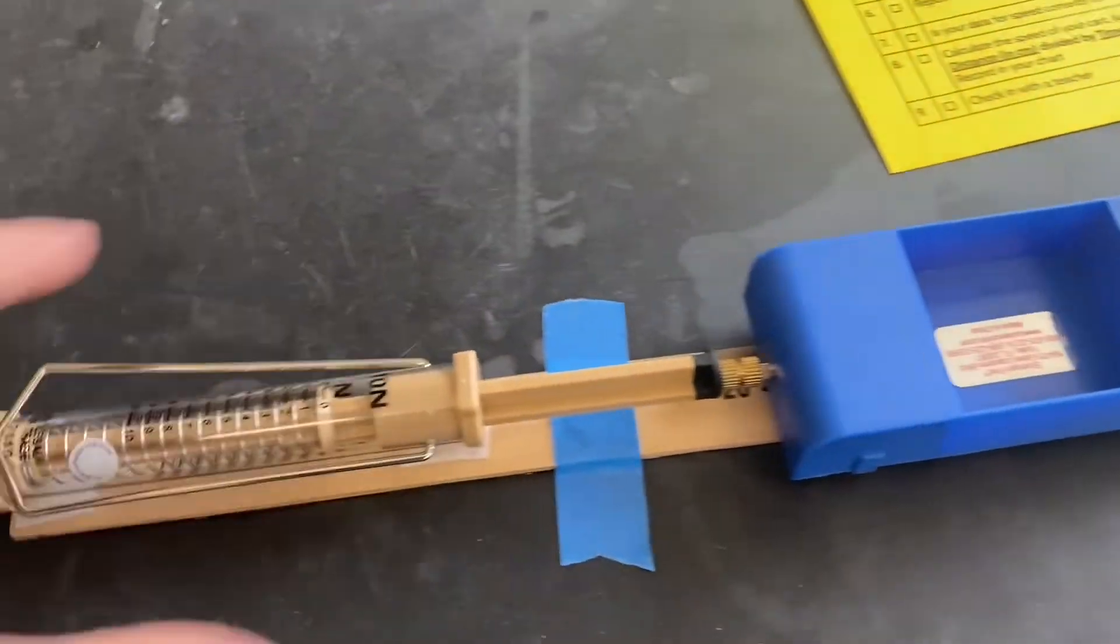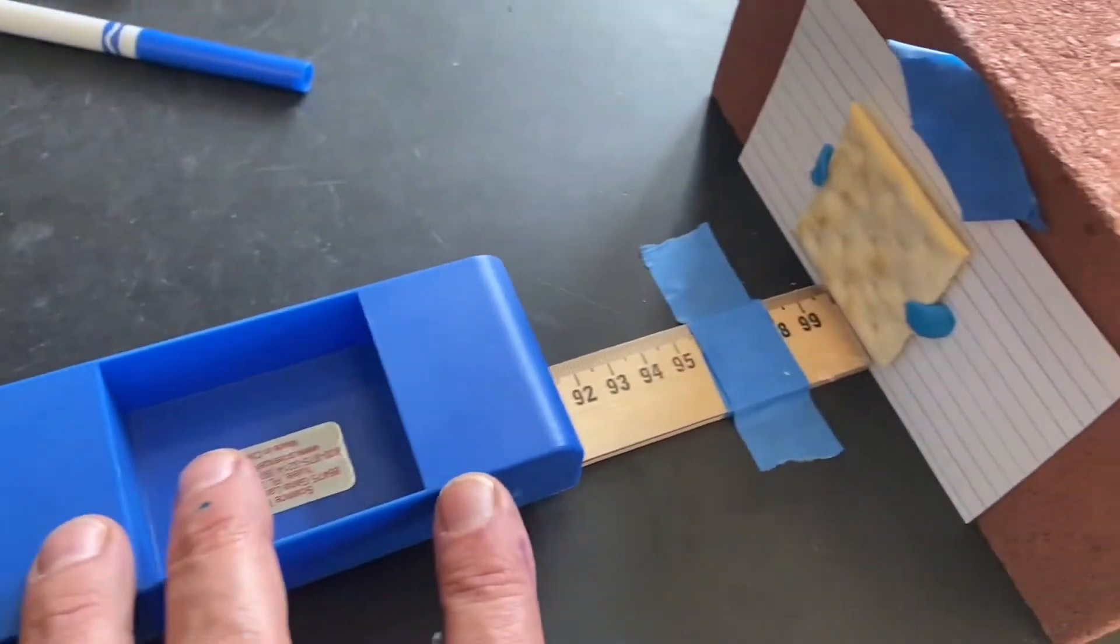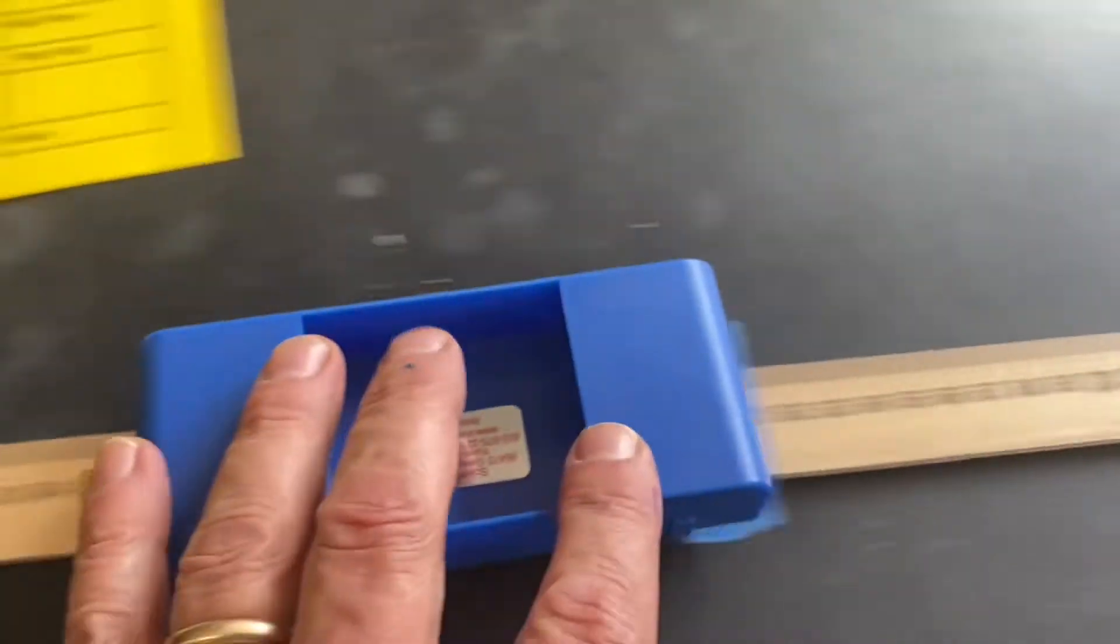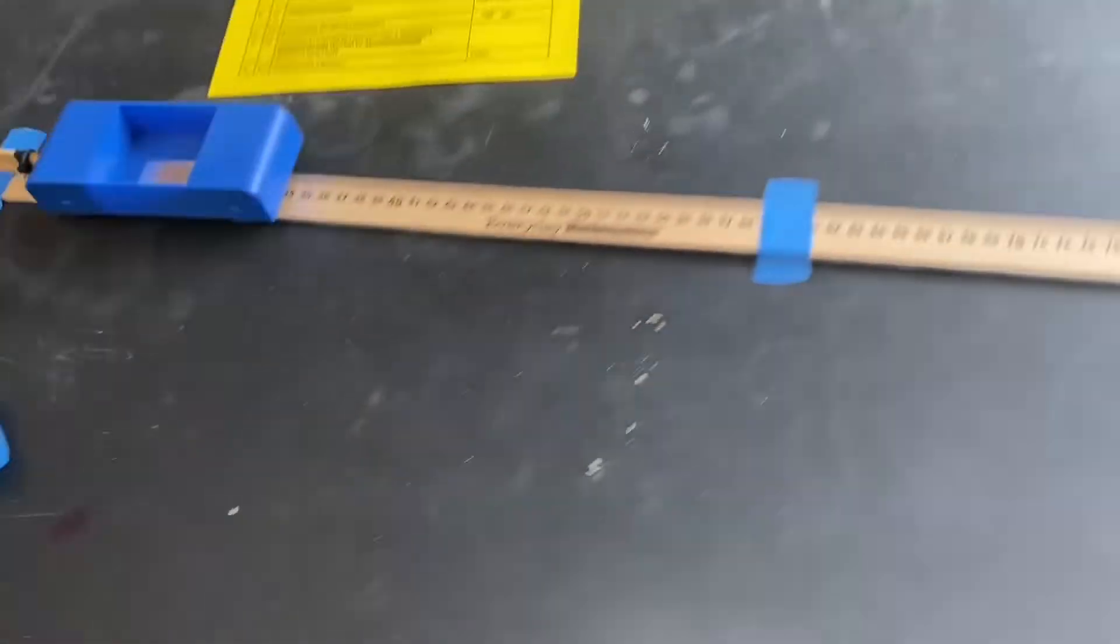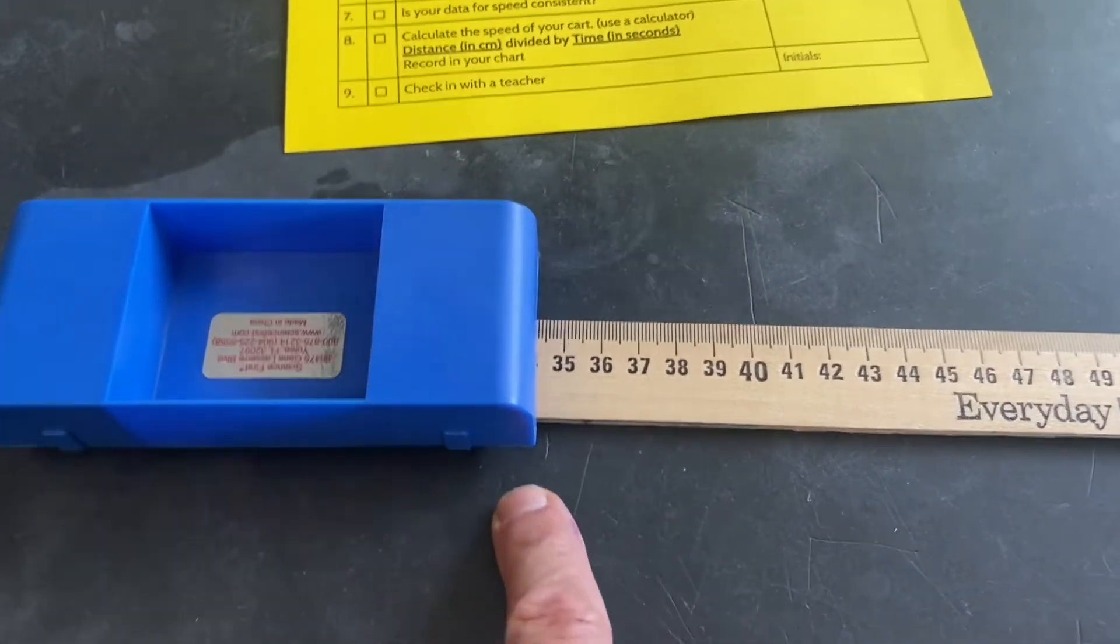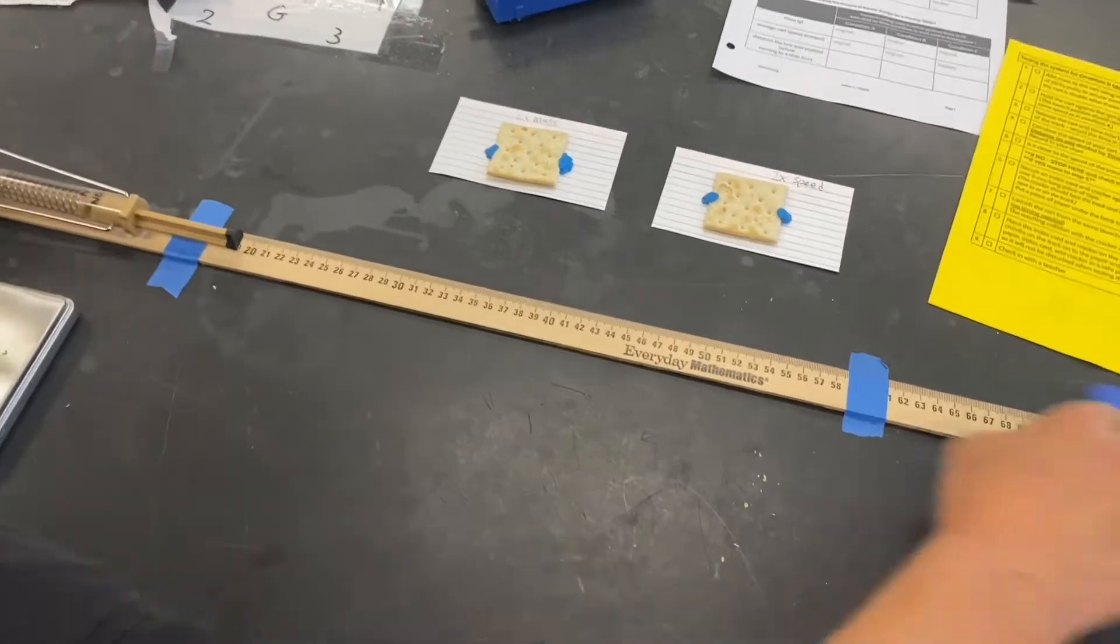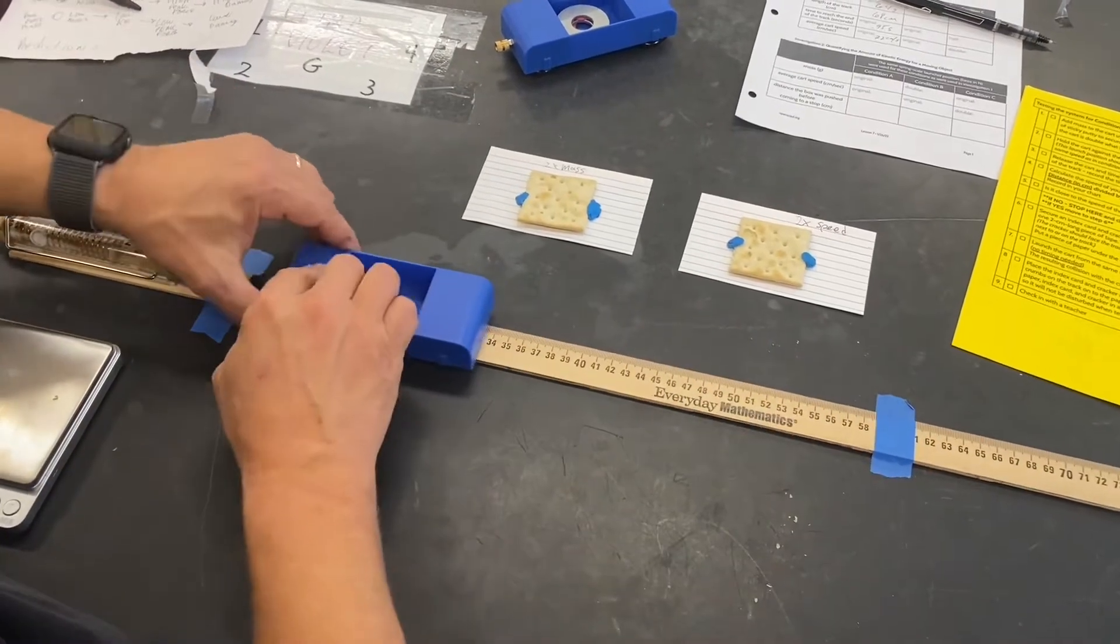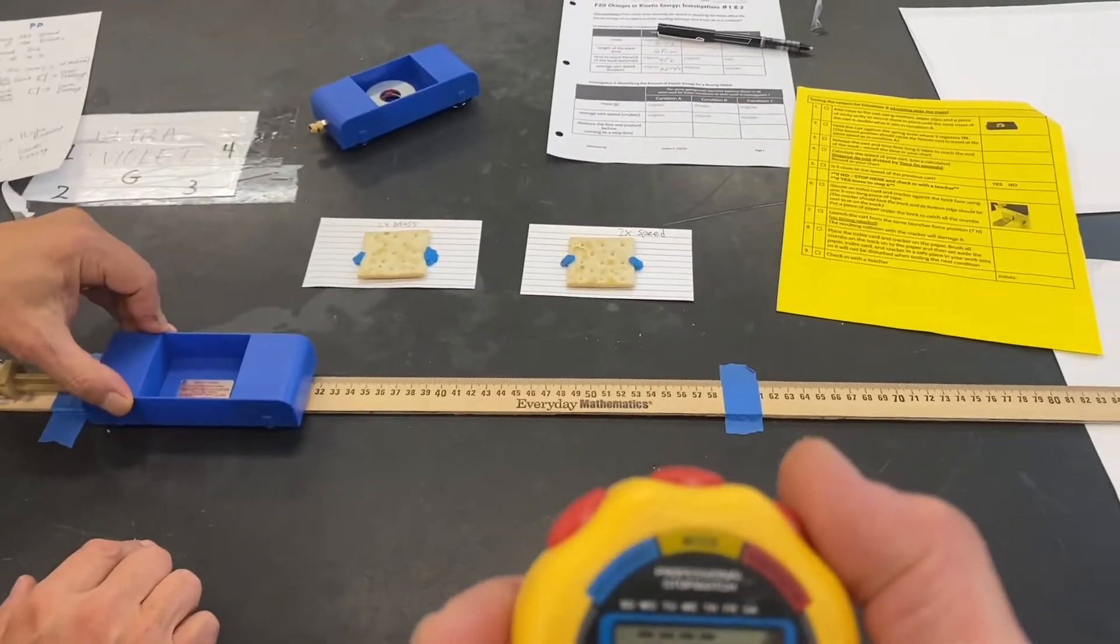So the way we're going to test this is we're going to launch a car and give it a certain speed. It's going to travel along and smash into some object. In this case a cracker, and we're going to judge how much the cracker gets damaged. So the first thing we have to figure out is how fast this car is going without any weight in it. The way we're going to do that is we're going to launch it and time how long it takes to get from where it starts to where it ends. 0.6, 0.62, 0.6... 0.56, 0.63, 0.69. Okay.